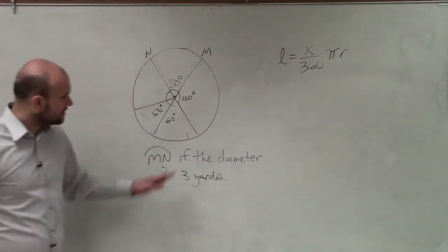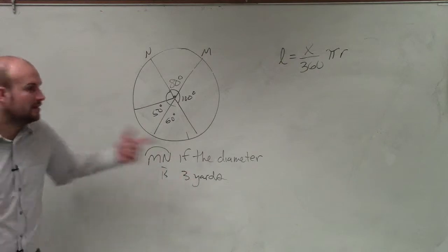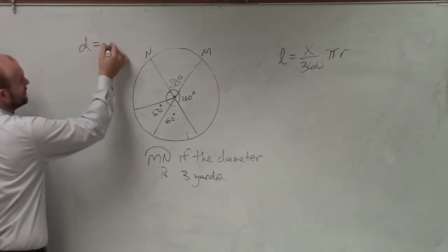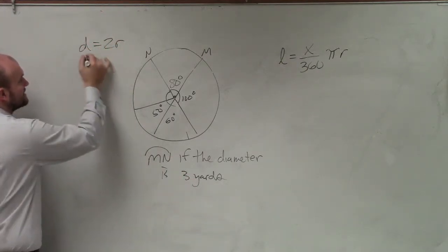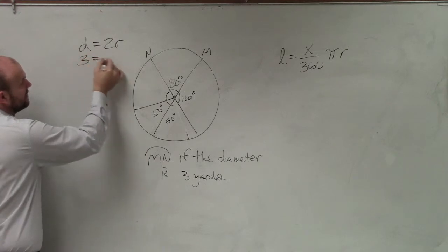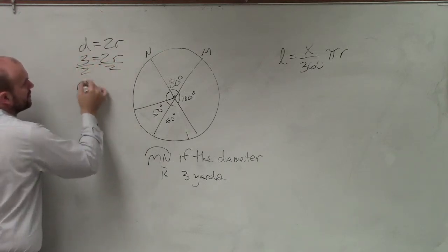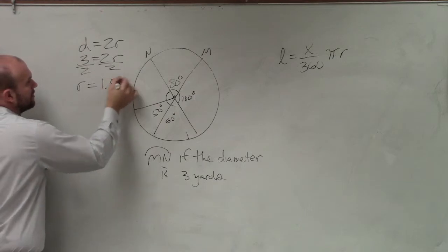Remember the diameter is equal to 2r. If the diameter is 3, then that's 2r. So I divide by 2, r equals 1.5.